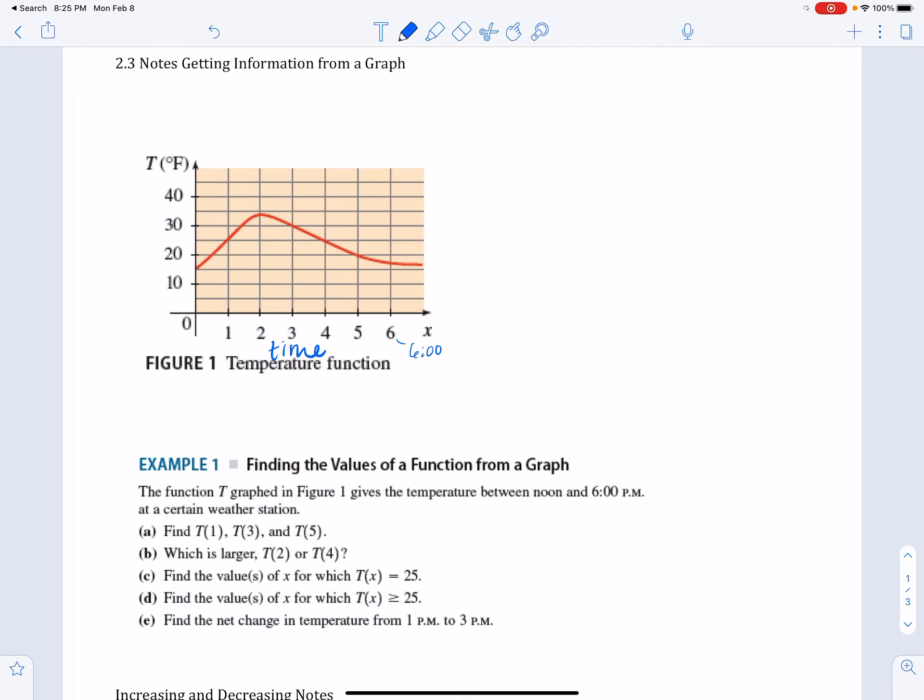The first question is just asking find T(1), T(3), and T(5). We just need to move up at 1 o'clock. So T(1) is the same as temperature at 1 o'clock, which is going to be 25 degrees. We can do the same thing for T(3) and T(5). So T(3) is temperature at 3 o'clock, which is 30 degrees, and T(5) is the temperature at 5 o'clock, and that is 20 degrees.